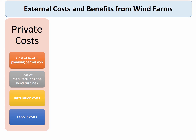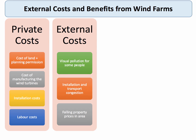Here's a quick example of the difference between private and social cost and benefit — let's take wind farms. The private cost of a wind farm would be the costs to the wind farm company themselves, including buying the land, acquiring planning permission, manufacturing and installing wind turbines, maintenance, and employing labour on site. External costs might include the negative effect of visual pollution for people living close to a wind farm, congestion externalities during construction, and possibly falling property prices nearby.